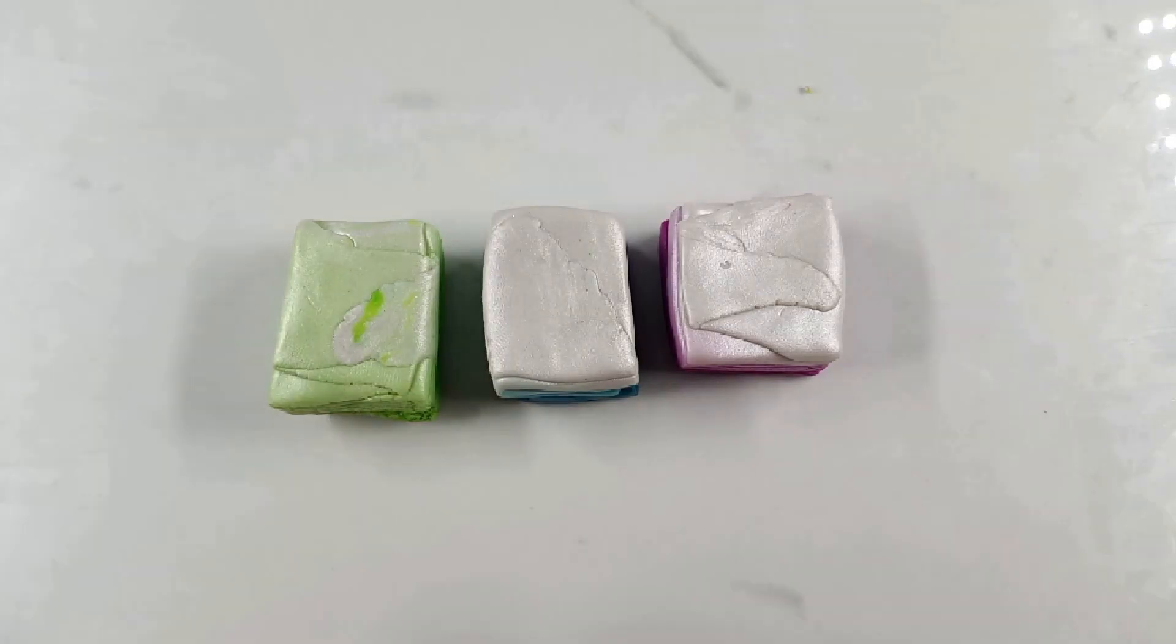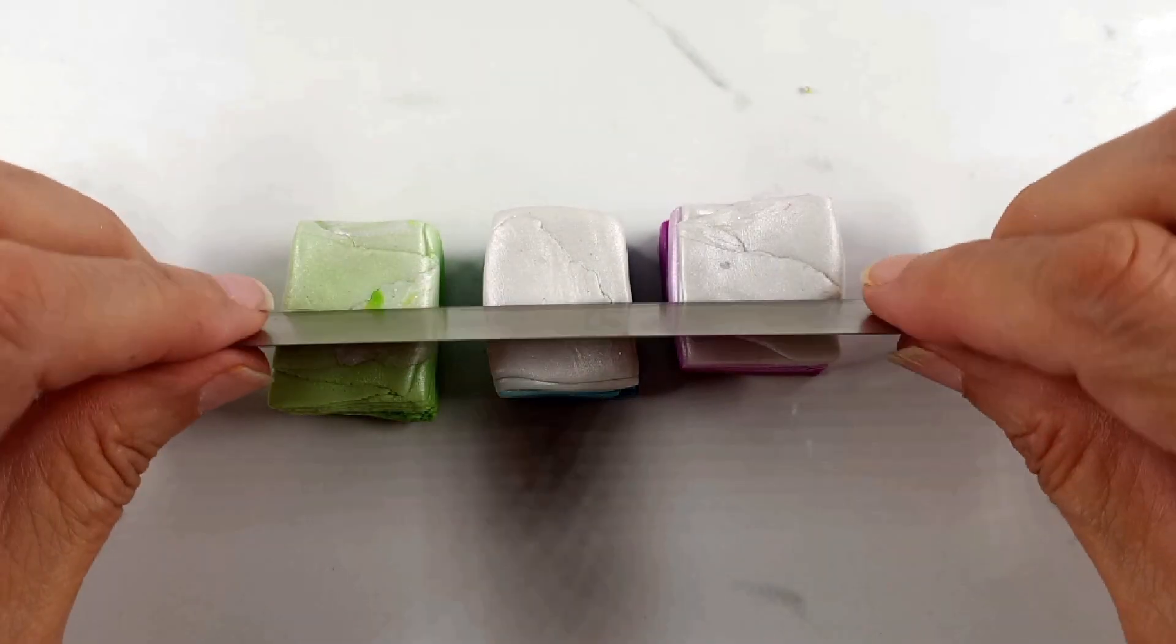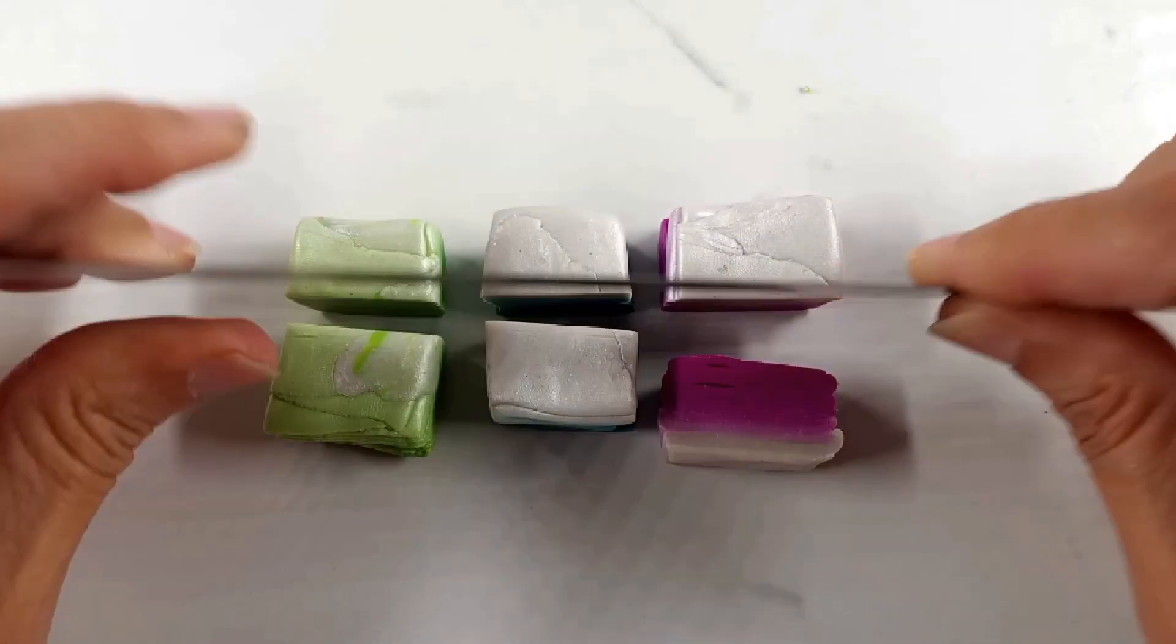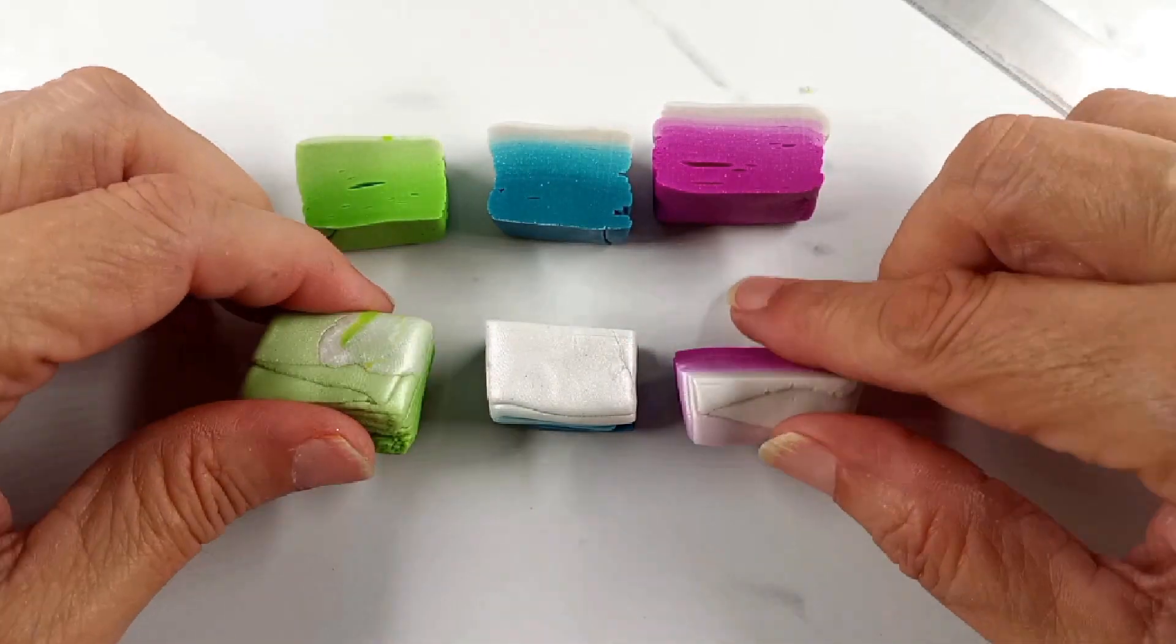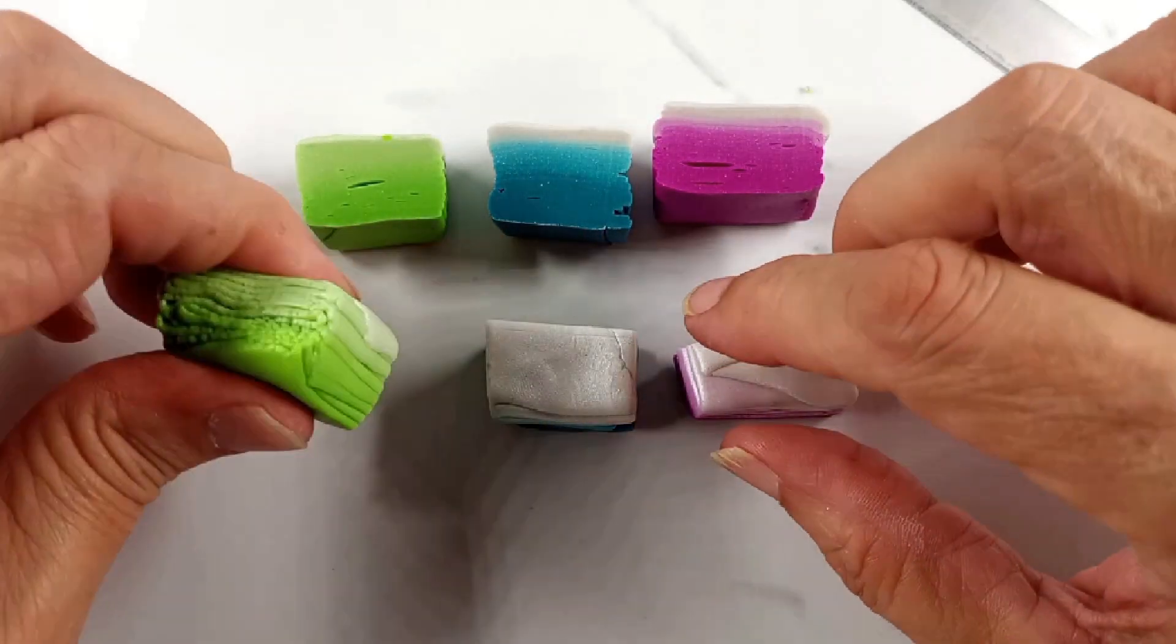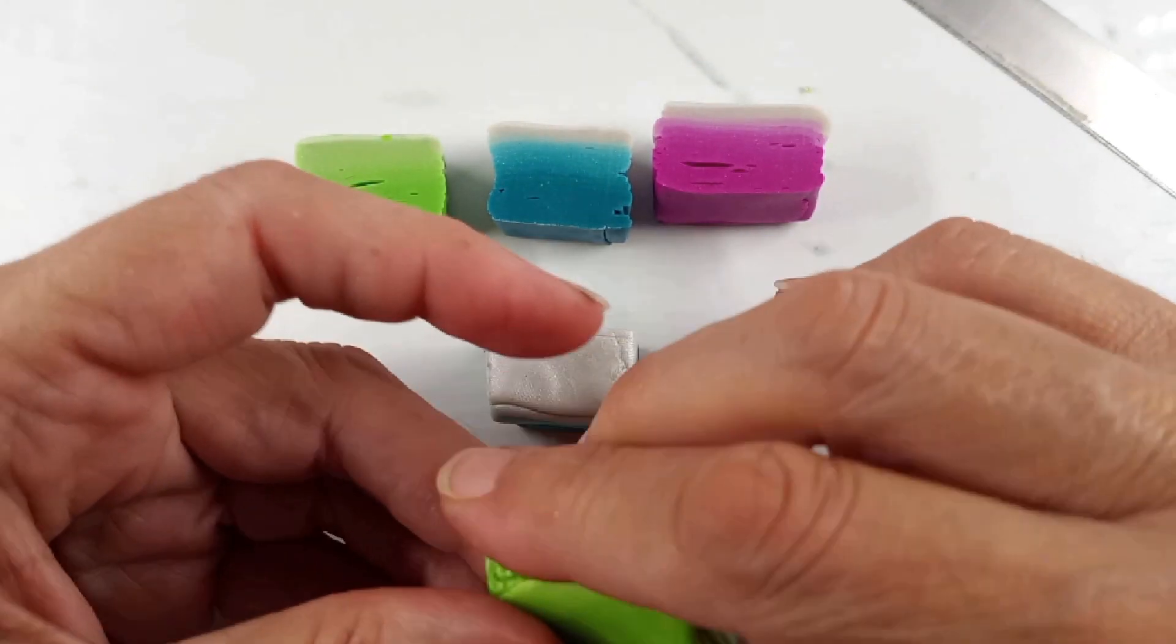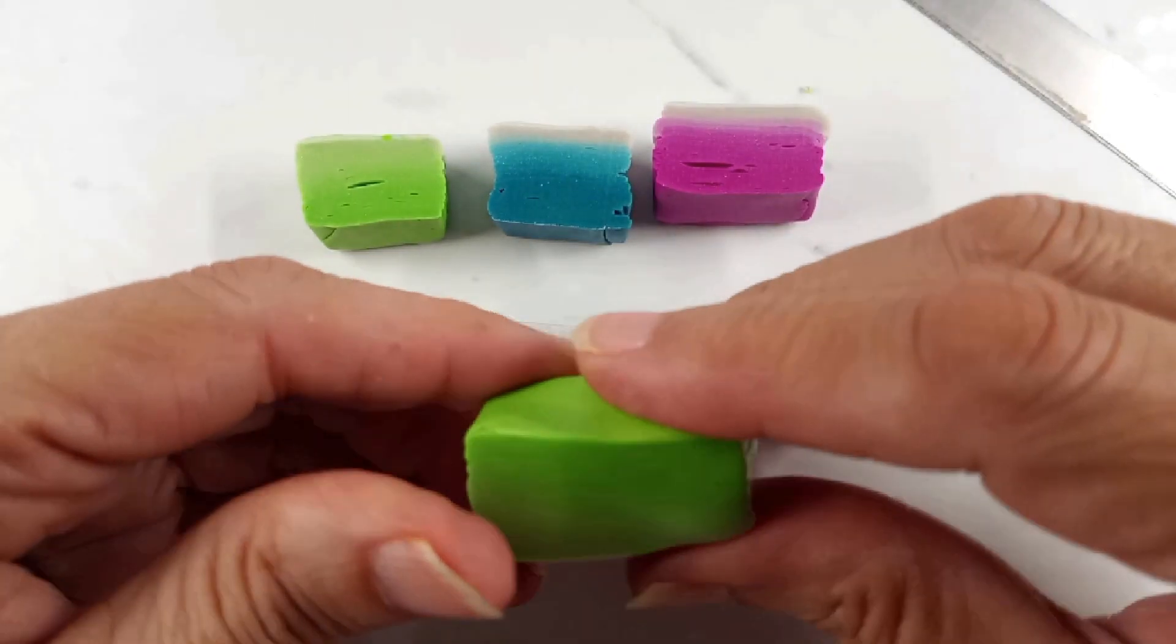Okay, so what I think I want to do is cut these in half. This is what they look like. And I think the three of them I'm going to make into a snake or log or sausage, whatever you want to call it.